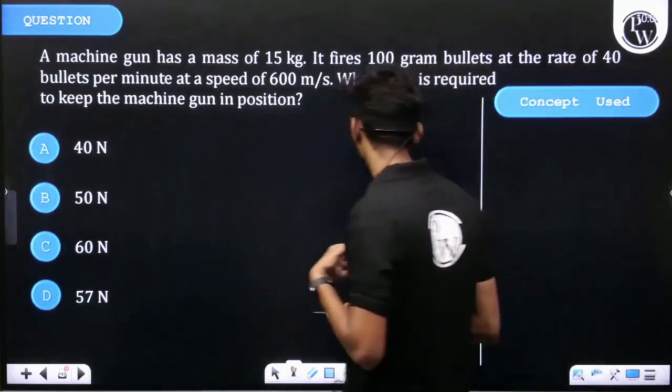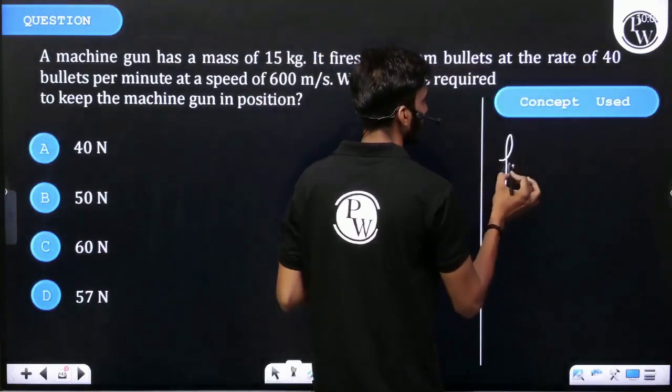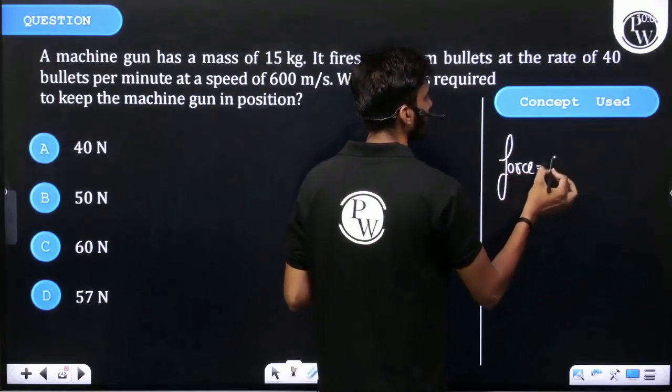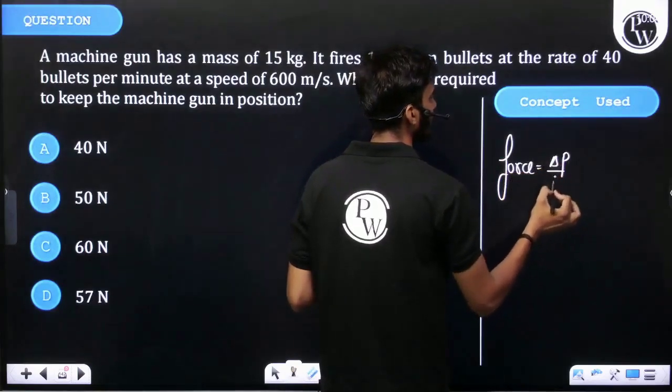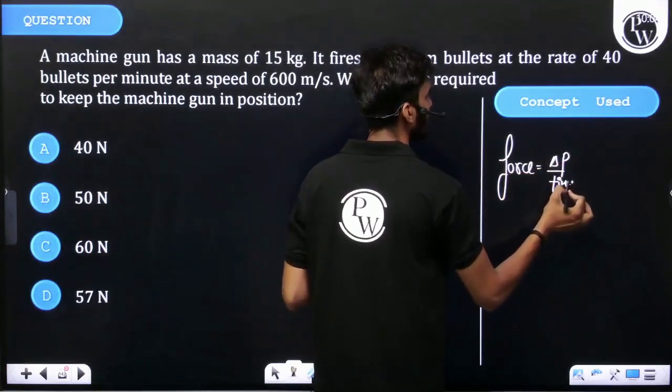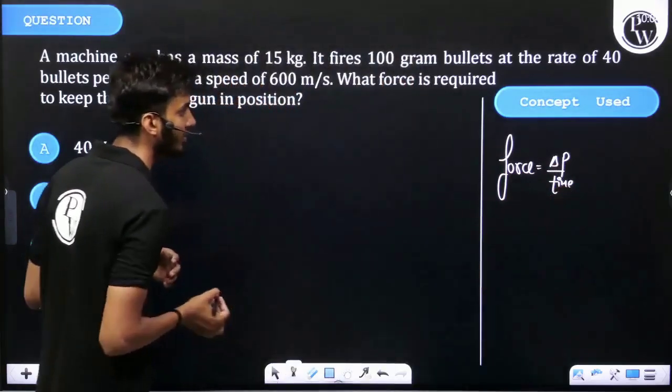The force that pushes on us - the force is equal to change in momentum upon time. Change in momentum upon time. Change in momentum is mass into velocity.